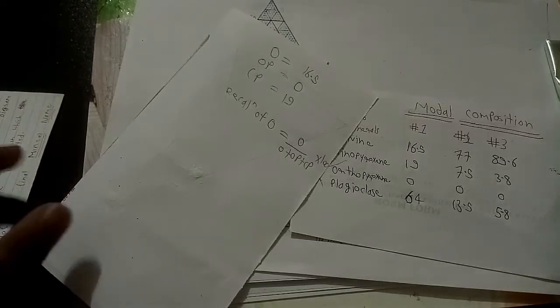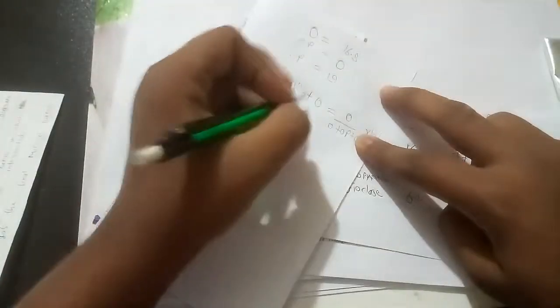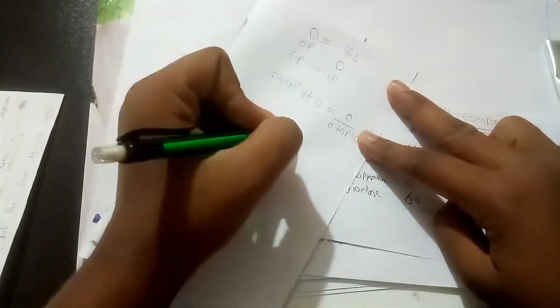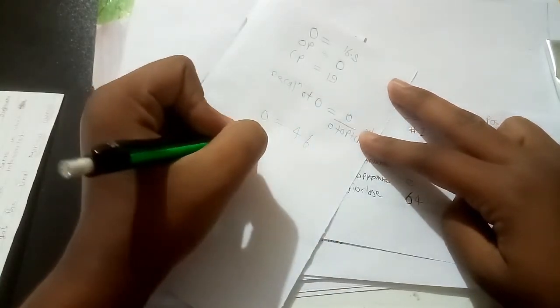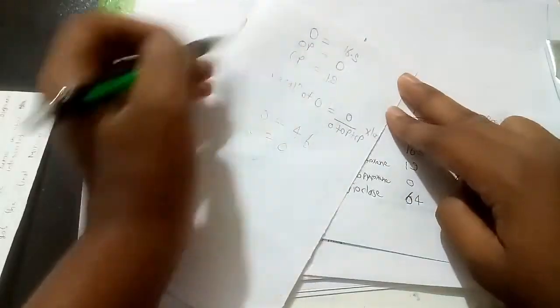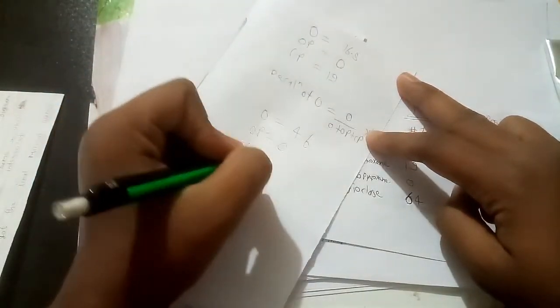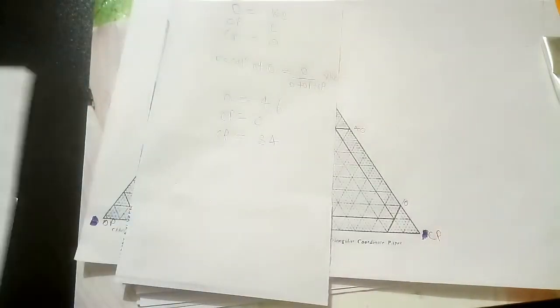So after the recalculation we got the values. The value of O is 46% and the value of OP is 0 because the whole is 0 only and the value of CP is 54. We got the values here.